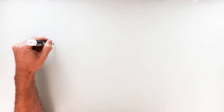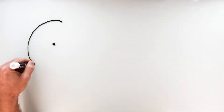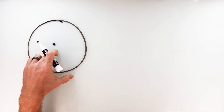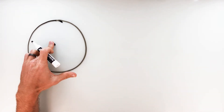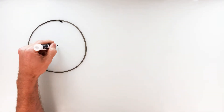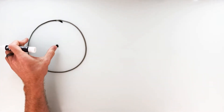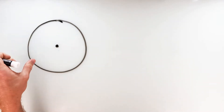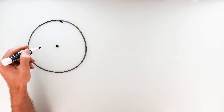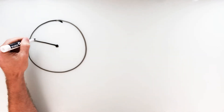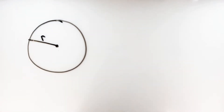First of all we're going to define what exactly a circle is. A circle is the set of all points equidistant from a given point called the center. Any point on the circle is the same distance away from the center as any other point. That distance we call the radius of the circle.